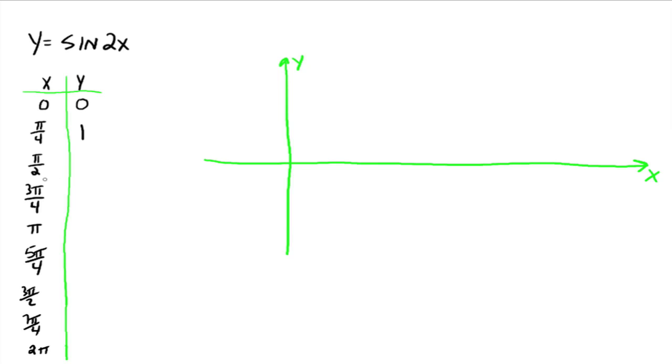Everybody see how that happened? If you take pi over 2 and plug it in for x, 2 times pi over 2 would be pi, and the sine of pi would be 0. If you take 3 pi over 4 and plug it in for x, then you're going to get 3 pi over 2, and the sine of 3 pi over 2 would be negative 1. If you take pi and plug it in, the sine of 2 pi would be 0.